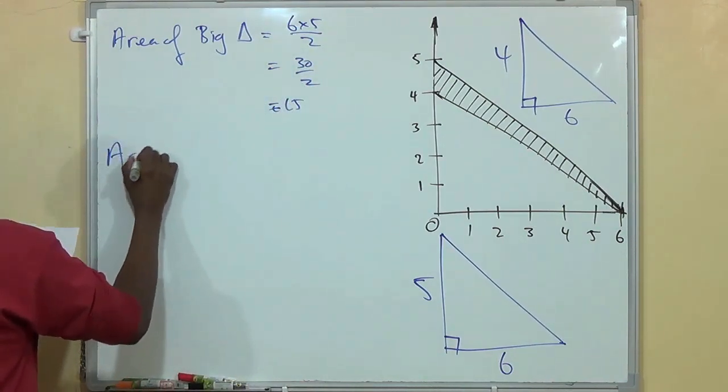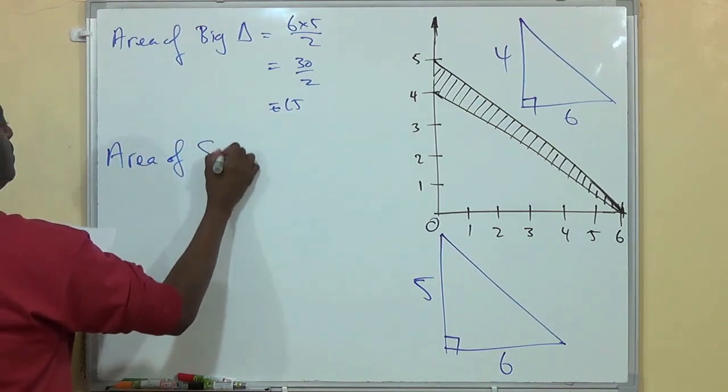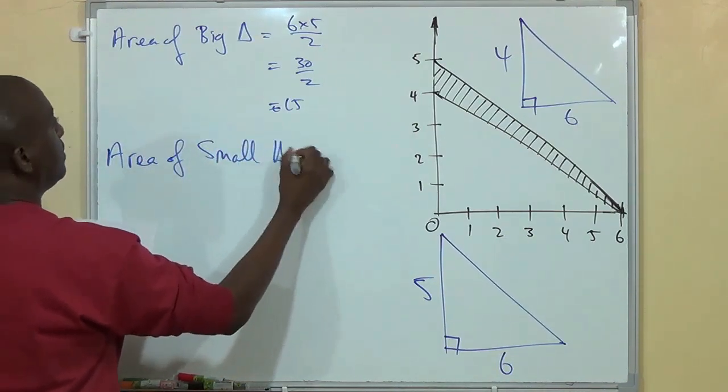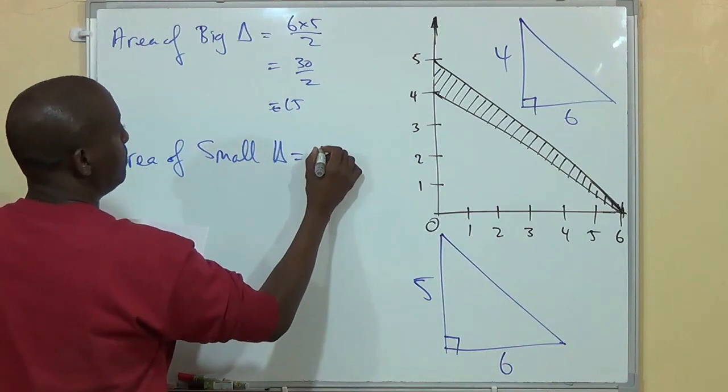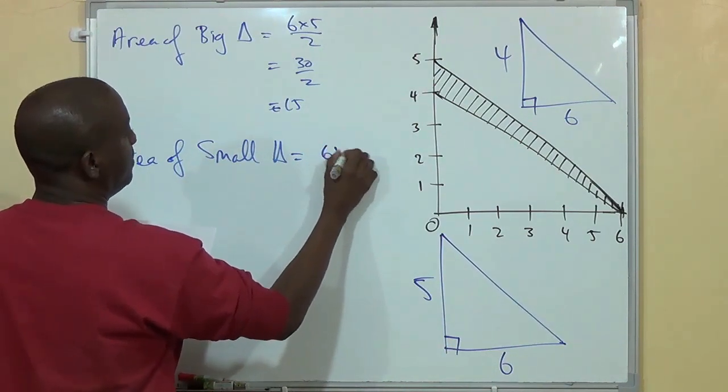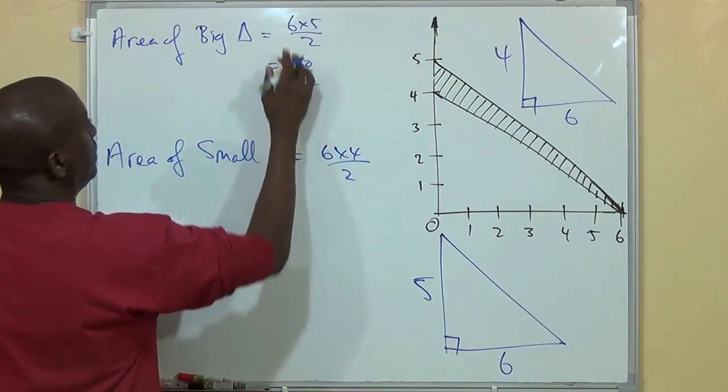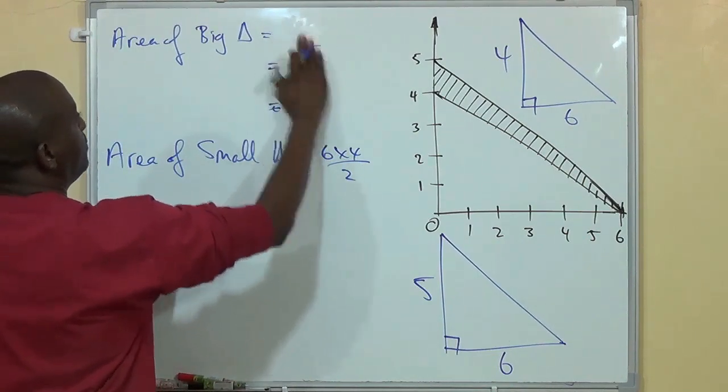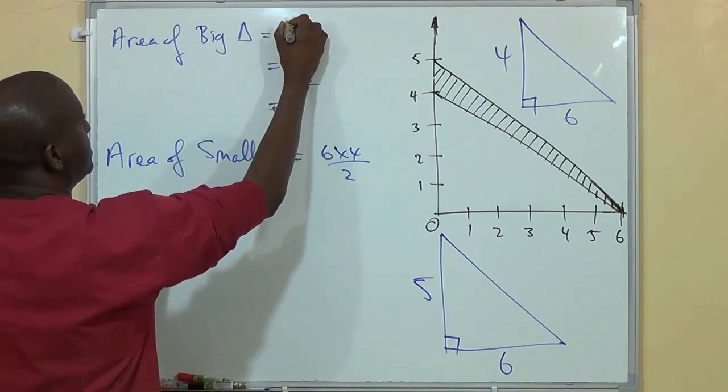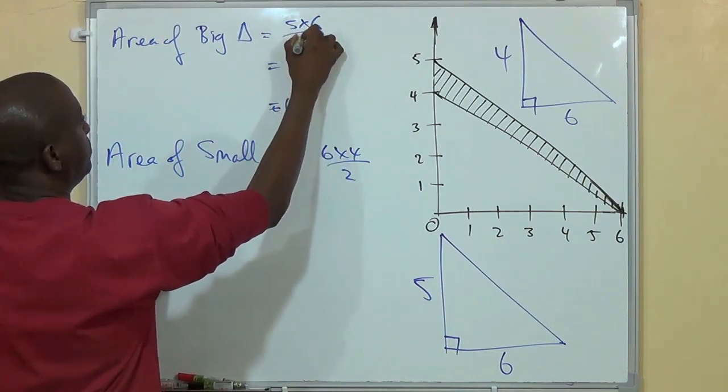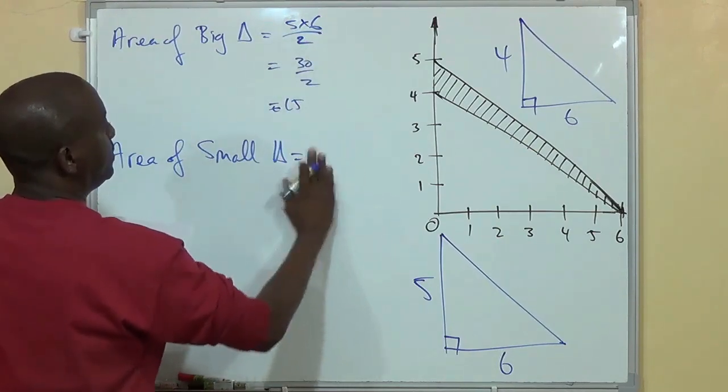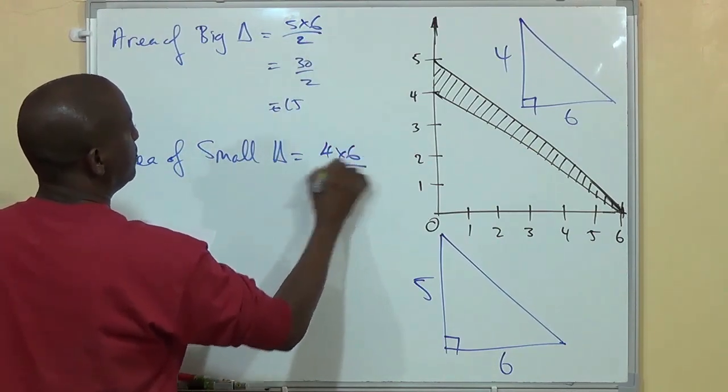And we know that the area of small triangle is equal to the same. The height by base in this case is 5 by 6 over 2. And in this case we're talking 4 by 6 over 2, which would be 24 over 2 which is equal to 12.